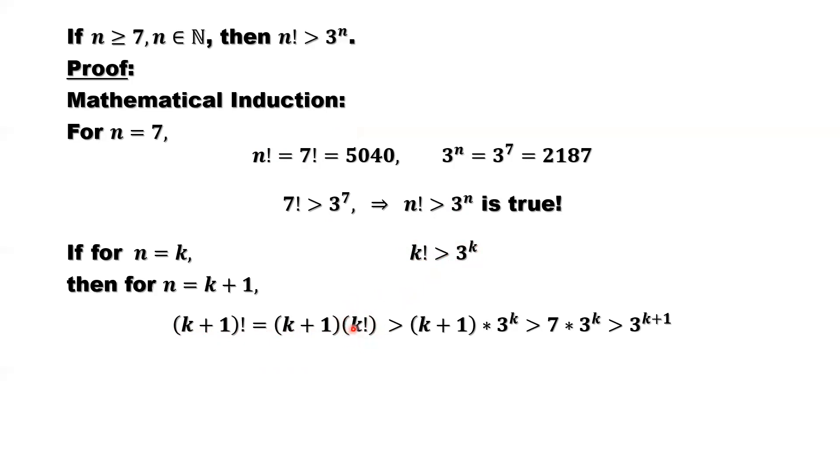We substitute k factorial by 3 to the power k. We have the greater than sign here because k factorial is greater than 3 to the power k.